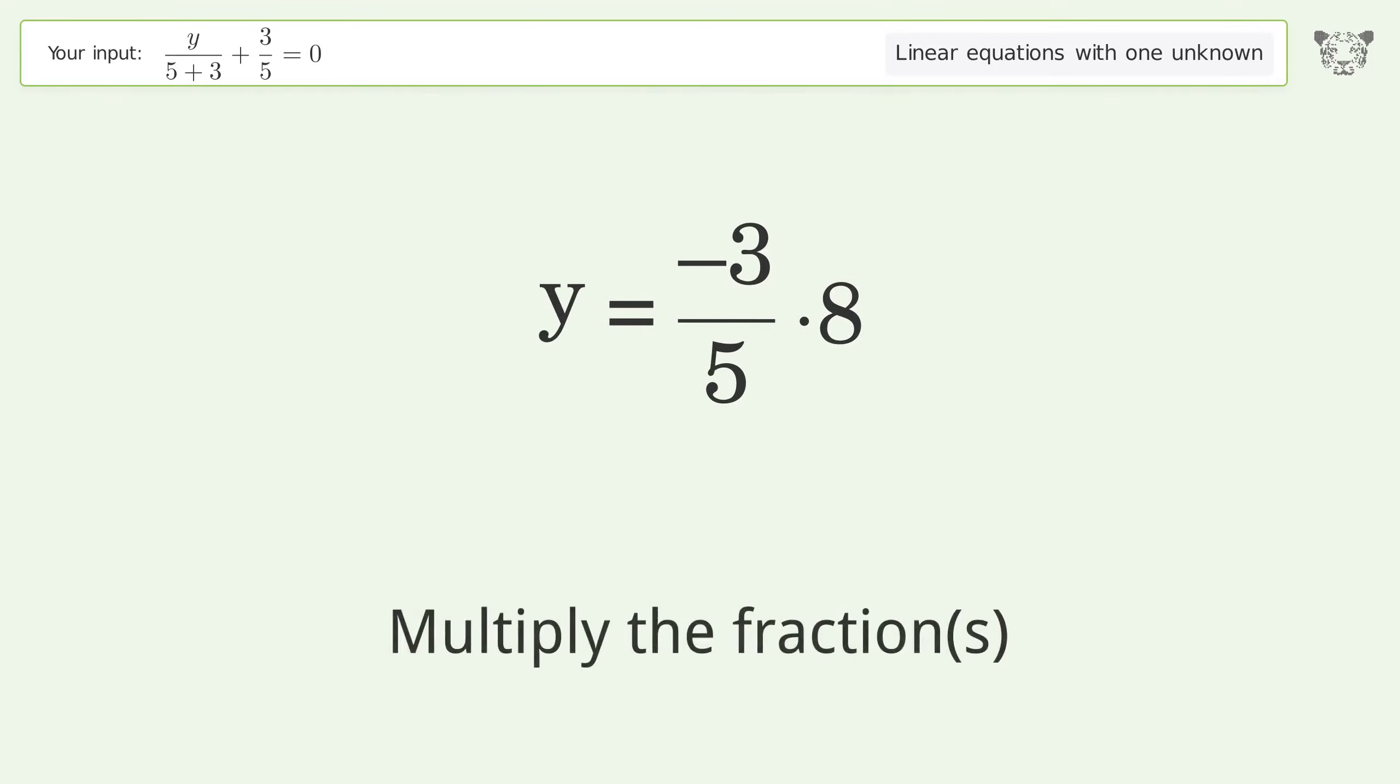Multiply the fractions. Simplify the arithmetic. And so the final result is y equals negative 24 over 5. Thank you.